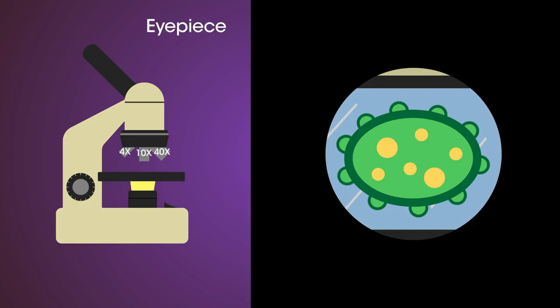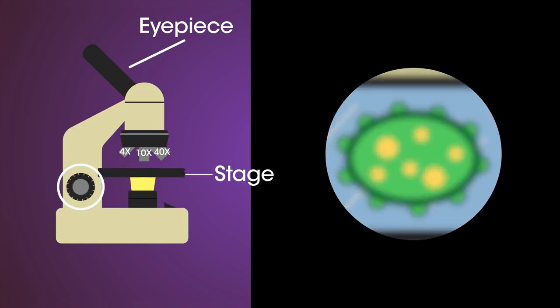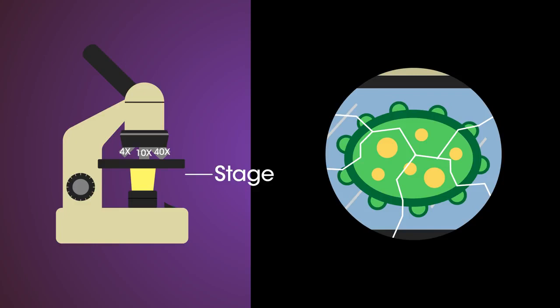If you look down the eyepiece lens you will see the image, but you will probably need to use the focusing knobs to move the stage up and down until the image is clear and not blurry. You must be careful when moving the stage up not to knock into the objective lens as this might break it.